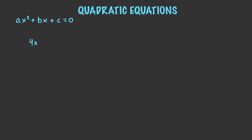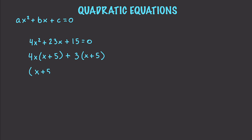Let's say you have 4x squared plus (2/3)x plus 15. We can simplify this to be (4x)(x plus 5) plus 3(x plus 5), which simplifies down to (x plus 5)(4x plus 3). Then we know that x plus 5 equals 0 or 4x plus 3 equals 0, giving us x equals negative 5 or x equals negative 3/4.